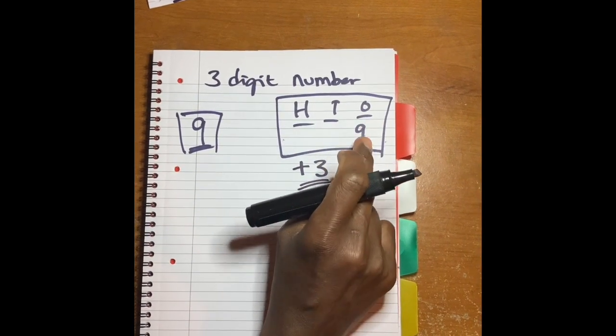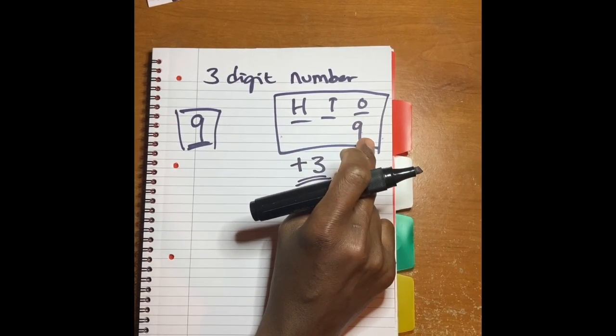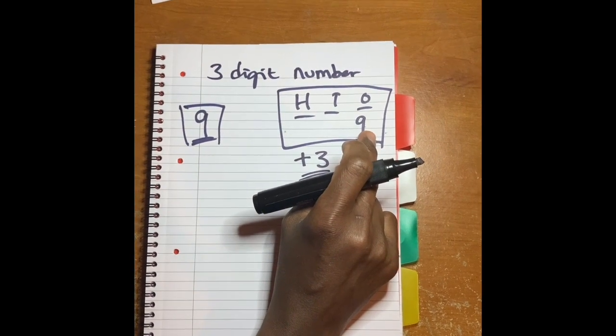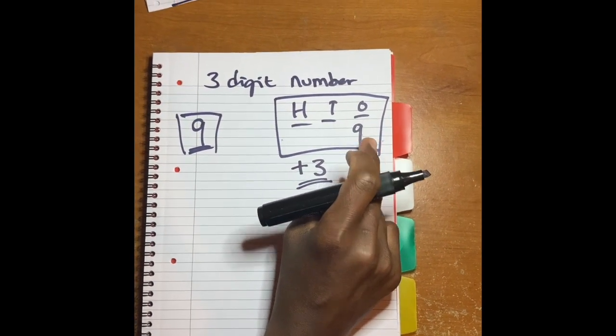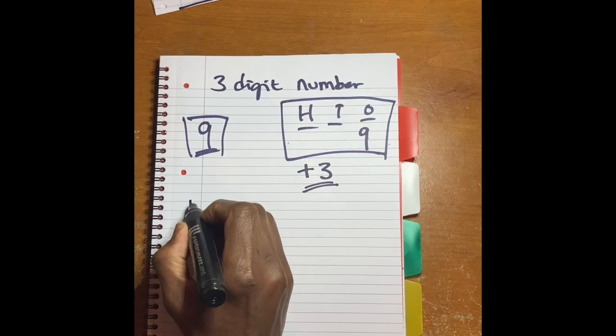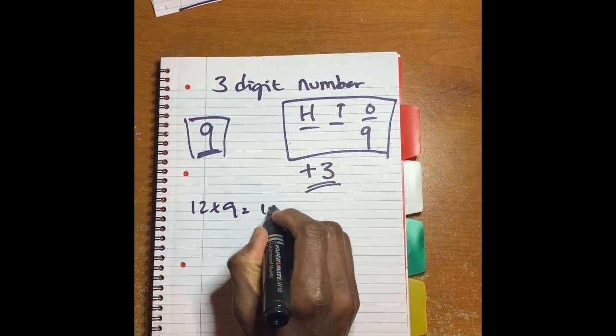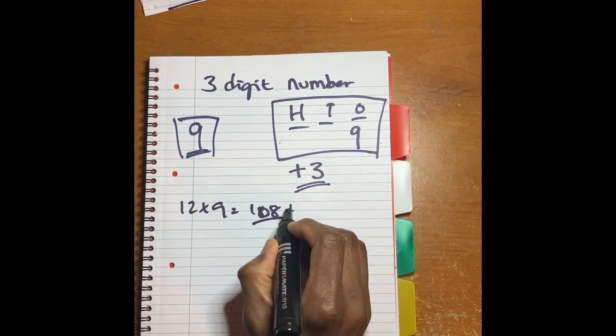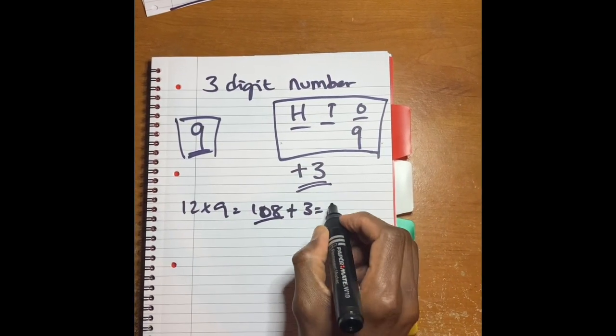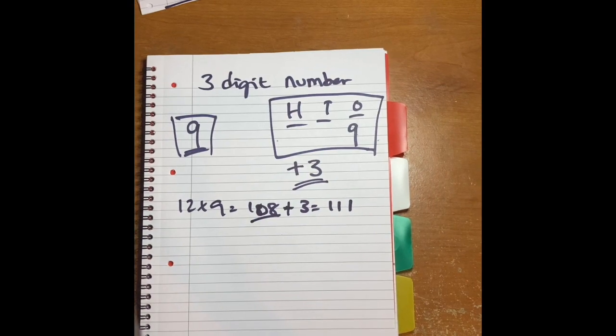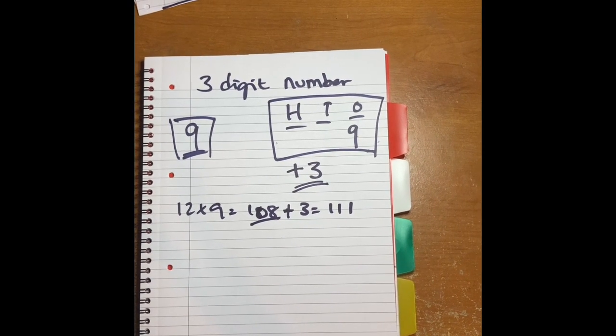Okay, so twelve times nine is 108. The answer plus three is 100 what? 111. Because we are taking step by step, easily we're going to look. Okay, let's go for the next one.